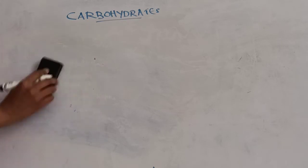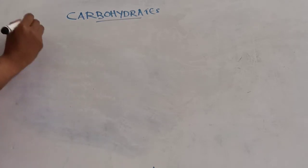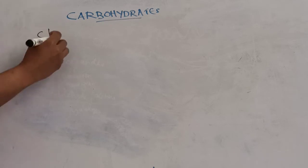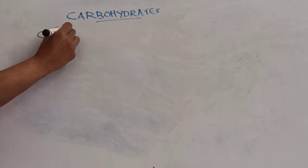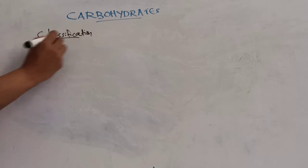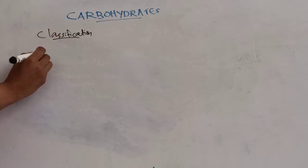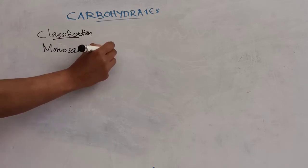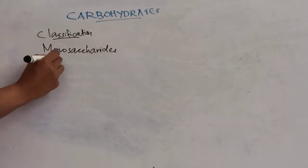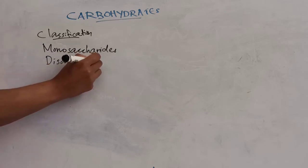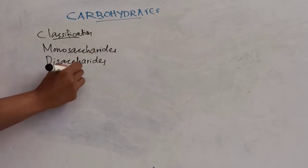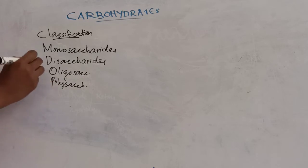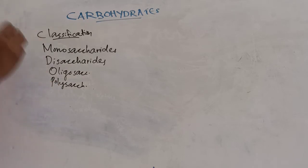Coming to the classification of carbohydrates, based on the number of monomer units or sugar units present and the degree of their polymerization, carbohydrates are classified into four main groups.